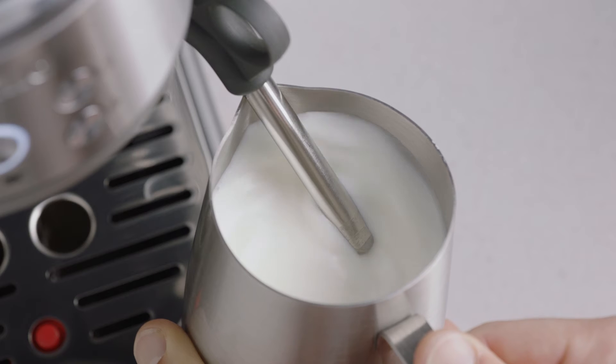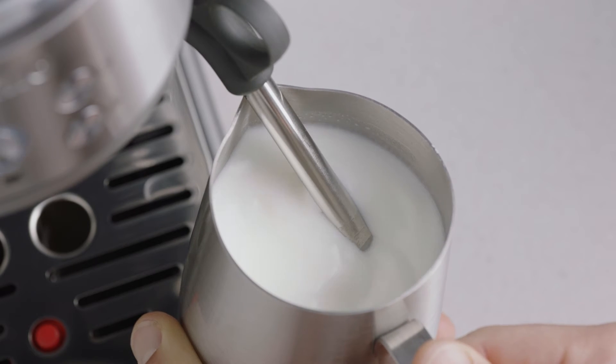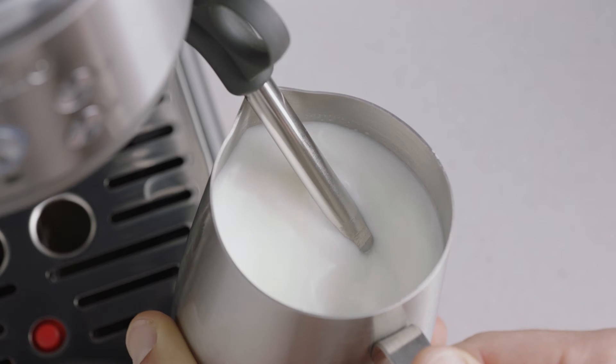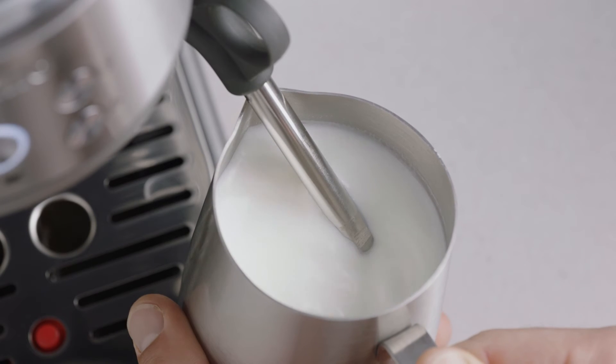This will introduce air into the milk. You may have to gently break the surface of the milk with the tip to get the milk spinning fast enough. Keep the tip at or slightly below the surface while continuing to maintain the whirlpool.